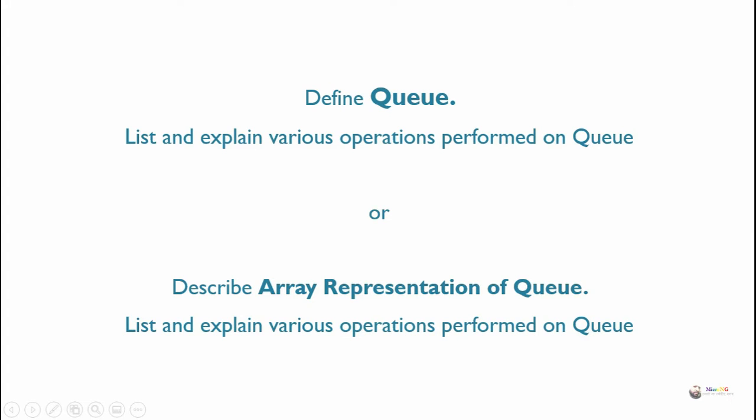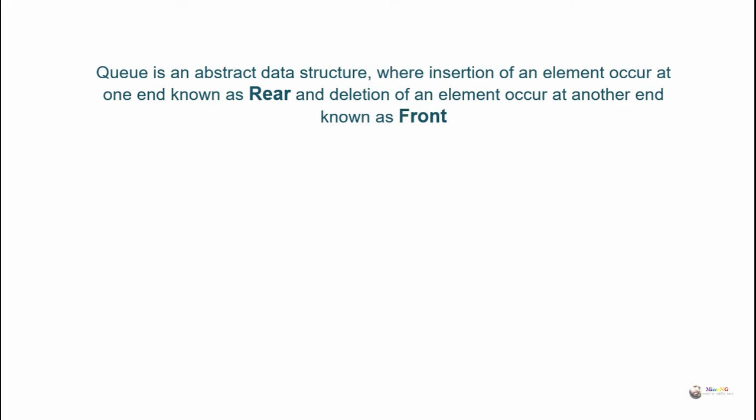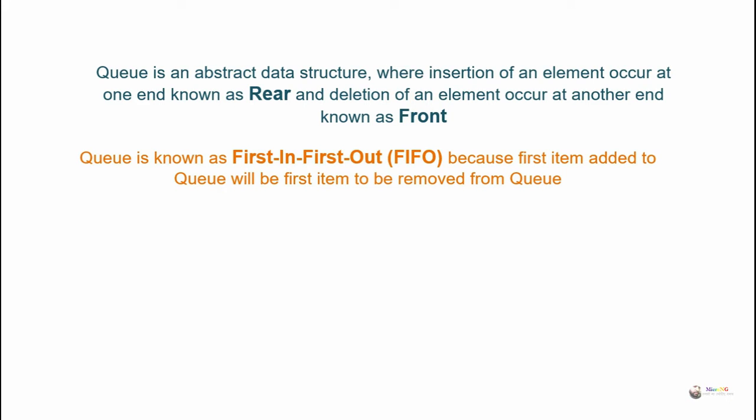Define Queue and list and explain various operations performed on Queue. Queue is an abstract data structure where insertion of an element occurs at one end known as rear, and deletion of an element occurs at another end known as front. Queue is known as First In First Out (FIFO) because the first item added to the Queue will be the first item to be removed from the Queue.